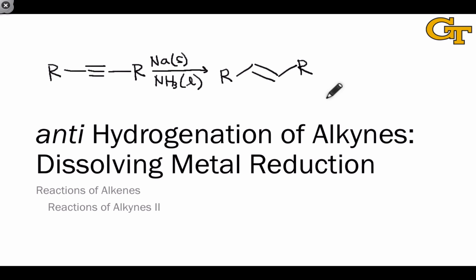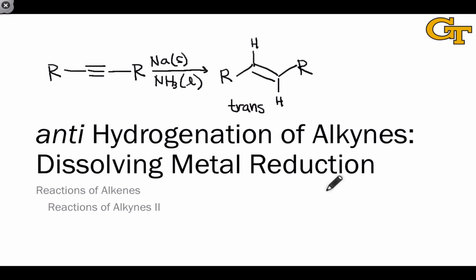All of the hydrogenation reactions we've seen so far have involved H₂ as the hydrogenation reagent and some kind of metal catalyst that enables the syn addition of the two hydrogens. In a case when we need anti-addition — for example, when we want to synthesize a trans alkene from an alkyne — we need to think in a very different way about how to accomplish hydrogenation.